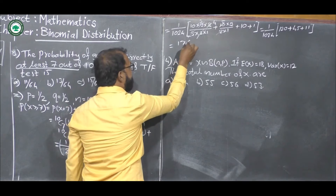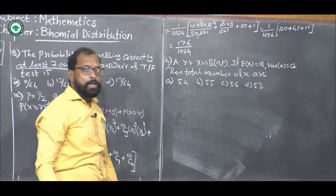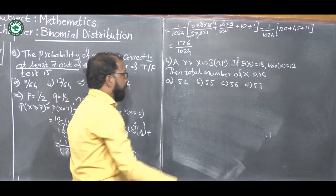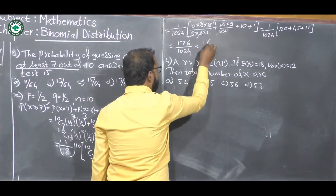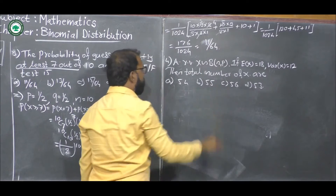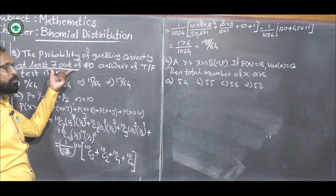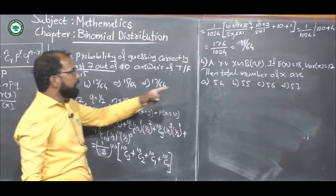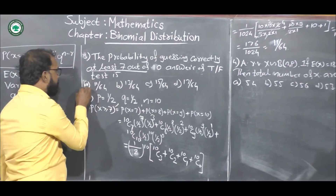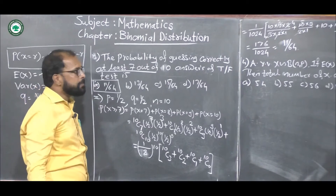So we get 176/1024, and after simplification it becomes 11/64. The probability that at least 7 questions are answered correctly is 11/64. So option A is correct.